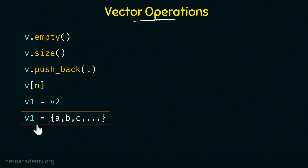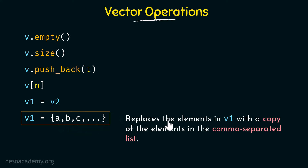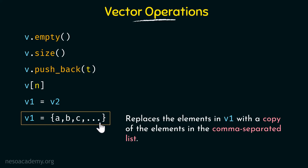Now coming to the next operation, we have v1 = {a, b, c, ...}. What this does is it replaces the elements in v1 with a copy of the elements in the comma-separated list. All elements of v1 will be replaced by the elements in this list. We will run this in VS Code to replace all existing elements with new values.